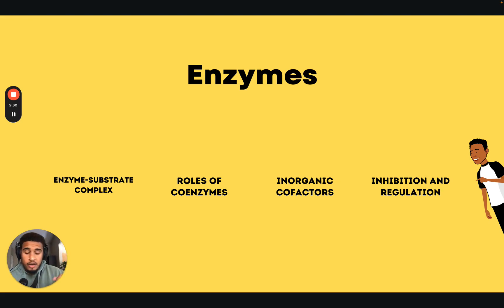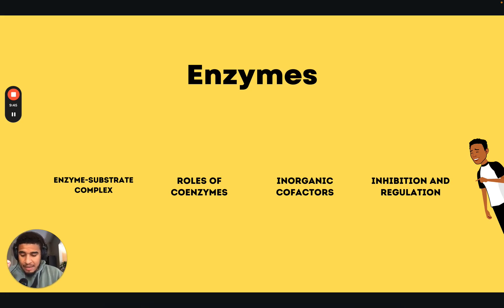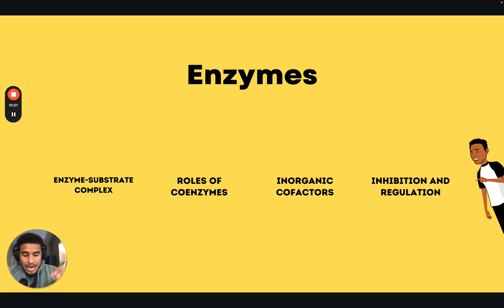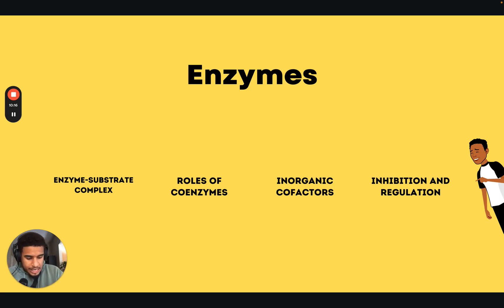Let's talk about enzymes. What do you need to know? Enzymes are biological molecules that act as catalysts, speeding up chemical reactions in living organisms. Beyond that, you need to understand the proteins of an enzyme and how the catalyst works. Enzymes are highly specific for their substrates, meaning they typically catalyze a particular chemical reaction or group of related reactions. This is often referred to as the lock and key model, where the enzyme — the lock — binds to a substrate — the key — with precision.